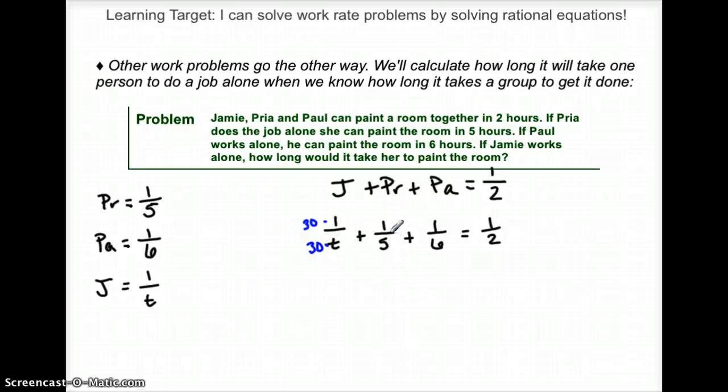What can I multiply 5 by to get to 30? I can multiply by 6, but this fraction doesn't have the T at the bottom. So I need to multiply by 6T. What can I multiply 6 by to get to 30? A 5, but I need the T again. So times 5T.